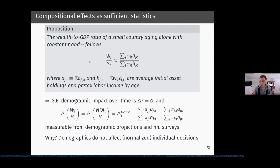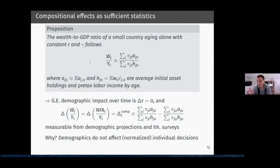The intuition for this result is that in the model, there is no direct effect of demographics on normalized individual decisions. Changes in the time-varying age distribution come from changes in fertility or number of newborns, which don't directly affect what agents optimize over. Therefore their decisions are constant — they keep choosing the same amount of assets and have the same labor income at each age. This tells us we can measure the extent to which demographics affects the wealth-to-GDP ratio at constant interest rates using pure cross-sectional data.